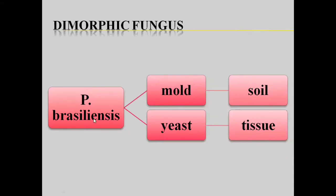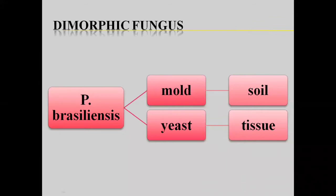Paracoccidioides brasiliensis can exist in mold form and yeast form depending on the temperature. The mold form exists in the environment, at around 25 degrees centigrade. The yeast form is present inside the tissues — at human body temperature, around 37 degrees centigrade, it differentiates into the yeast form.